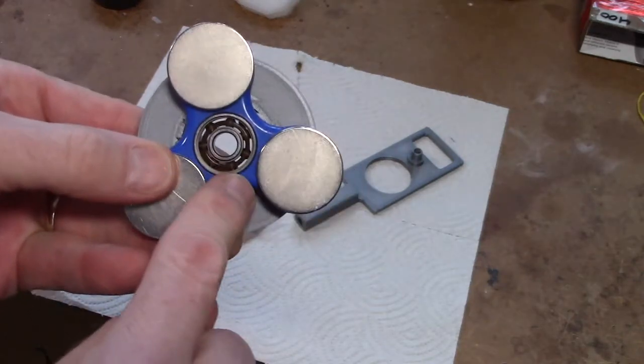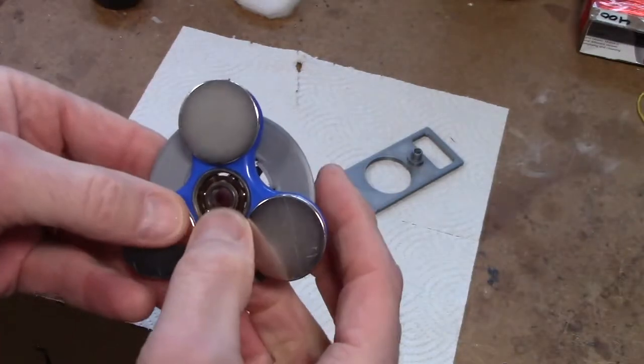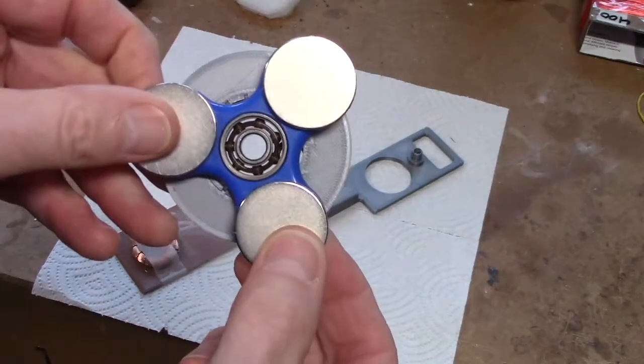I've taken off the handle, just take a screwdriver and just pry off the place you usually hold onto the fidget spinner. So now that bearing is exposed.